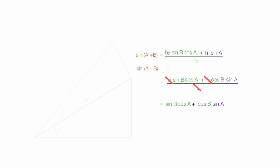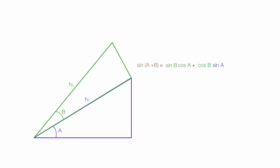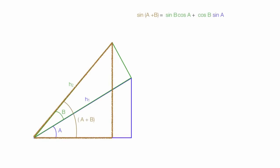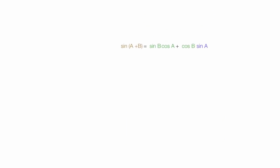And voila — that's it. This is a proof that sine of a plus b is equal to sine b cosine a plus cosine b times sine a. And sine a plus sine b is equal to h1 times sine a plus h2 times sine b — so we're comparing these distances right there. In the end, this is the proof we were looking for.